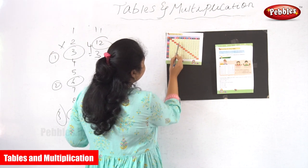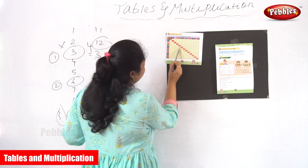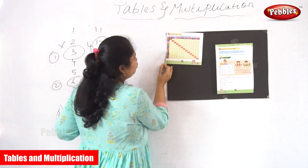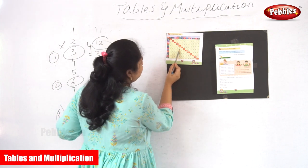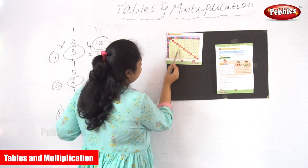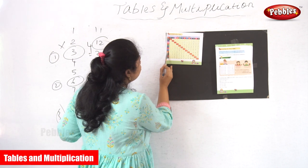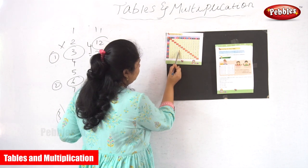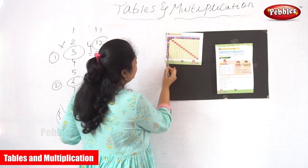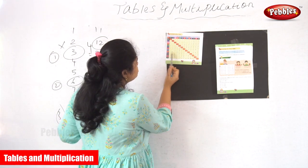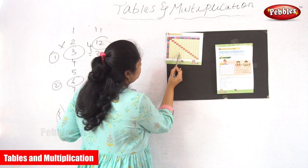5 into 4 is equal to 20. 6 into 4 is equal to 24. 7 into 4 is equal to 28. 8 into 4 is equal to 32.